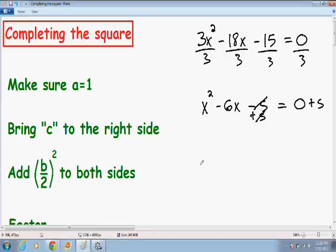Now I'm just going to simplify this before we move on to our next step. On the left hand side we have x squared minus 6x. And on the right hand side we have 0 plus 5 which is just 5. So moving on to our next step is we want to add b over 2 squared to both sides.